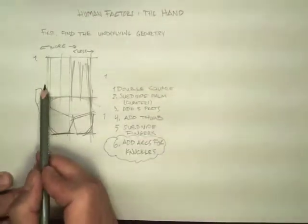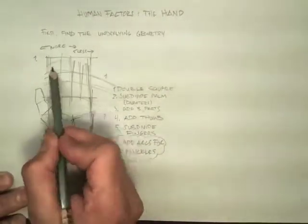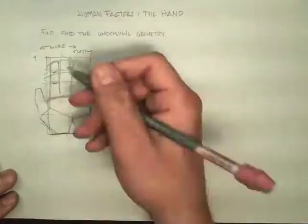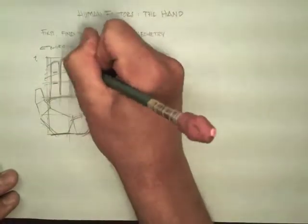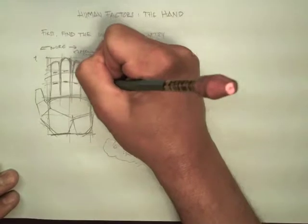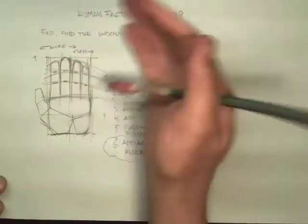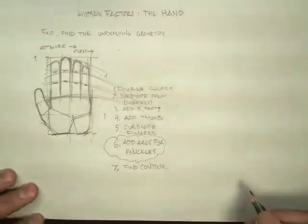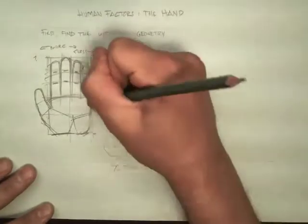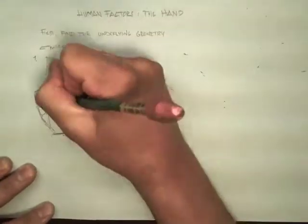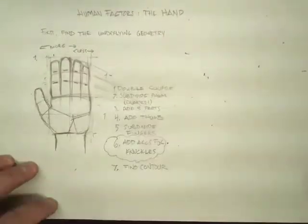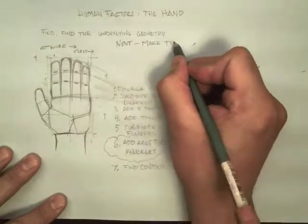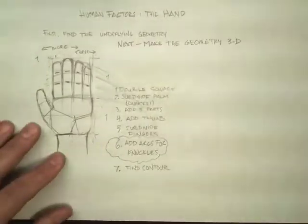We are going to subdivide the fingers. Remember that the first two fingers are more than half of the top half of the hand. Once we subdivide the fingers, we'll add arcs for the knuckles. The knuckles will always follow arcs. Find a quick contour for your hand and you're off to the races.